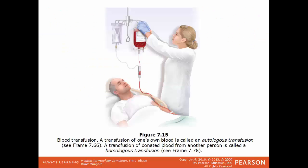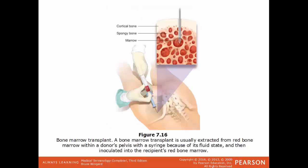An illustration shows a blood transfusion — autologous when receiving your own blood, and homologous when receiving blood from someone else. In a bone marrow transplant, a sample of red bone marrow is taken from the pelvis of the donor and introduced into the recipient's red bone marrow.